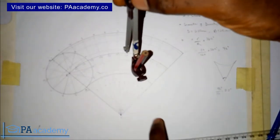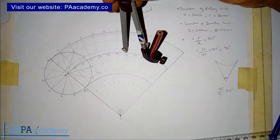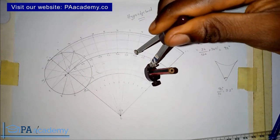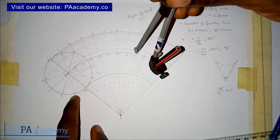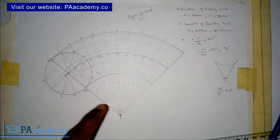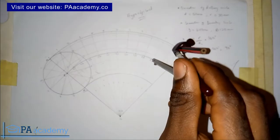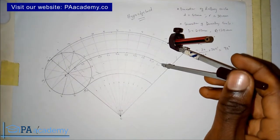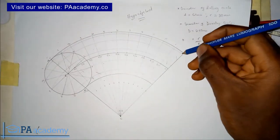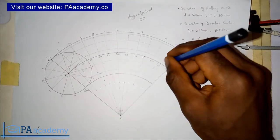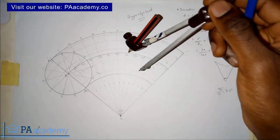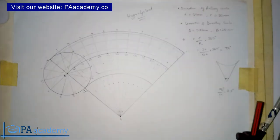Continue placing the compass on C7 and drawing an arc on line 7, then C8 on line 8, C9 on line 9, C10 on line 10, C11 on line 11. Point 12 will land on the endpoint. Note all these intersection points — those are the points we are going to join together to form our hypocycloid.